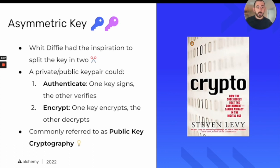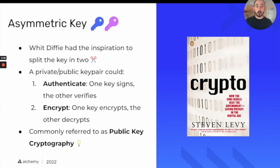Other researchers laughed him out of the room, saying you never split the key in two — the concept is to keep keys private. But Whit Diffie had this idea: if you split a key into a public key and a private key, and put the public key in the public domain, you could unlock interesting use cases. One is authentication, where one key signs and the other verifies — the private key signs the message, and anyone with the public key can verify it came from you, without knowing your private key.